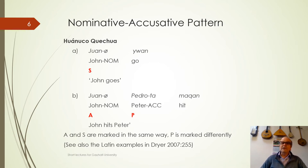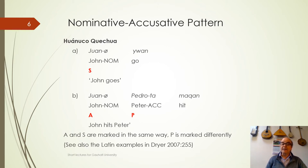In Huánuco Quechua, spoken in South America in Peru and Bolivia, if you say 'John goes,' you say 'Juan' — John is an S argument, the single argument of an intransitive clause. If you say 'John hits Peter,' Juan is the A, the more agent-like or subject-like argument of the transitive clause. And Pedro, Peter, is the P, the object or patient-like argument. Here we can see that A and S are marked in exactly the same way, but P is marked differently.